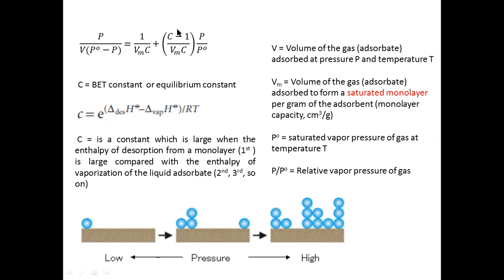This is a repetition from the first lecture. The BET adsorption isotherm equation is given here with its constant — the BET adsorption constant or equilibrium constant. Here v is the volume of gas at pressure p, and vm is the volume of gas adsorbed to form a saturated monolayer per gram of adsorbent, simply called the monolayer capacity. P over P₀ is the relative vapor pressure, where p is the gas pressure and P₀ is the saturated pressure at temperature T.